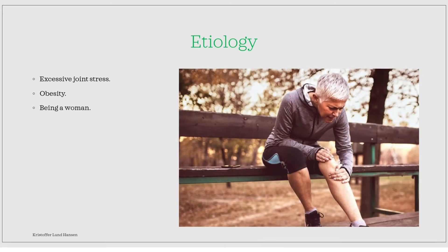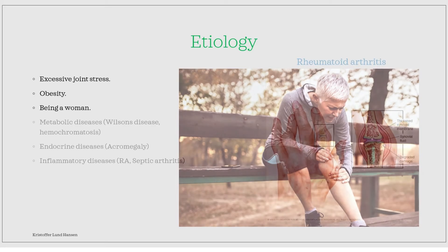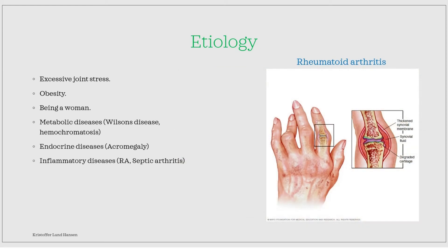There is a slightly higher susceptibility to osteoarthritis in women, though it is not a huge difference. Some underlying diseases can also give increased susceptibility to osteoarthrosis. Rheumatological diseases that attack the joint, such as rheumatoid arthritis, are important to know. Metabolic and endocrine diseases, such as hemochromatosis, are also very associated.